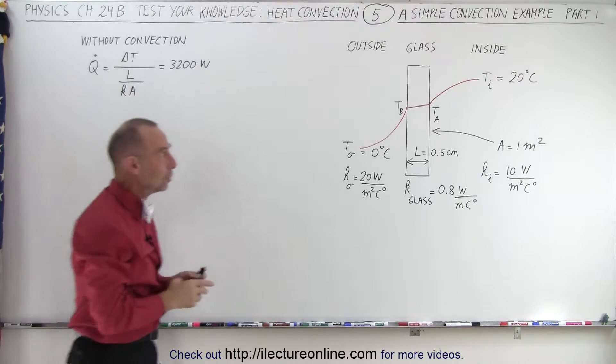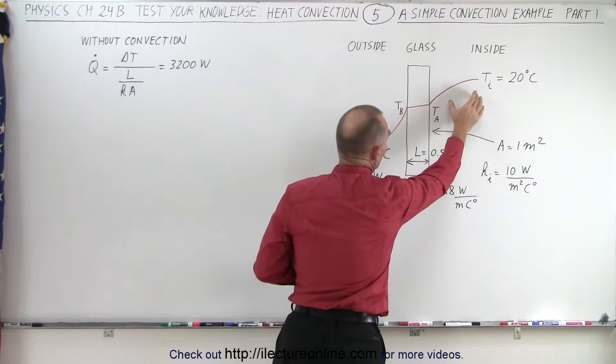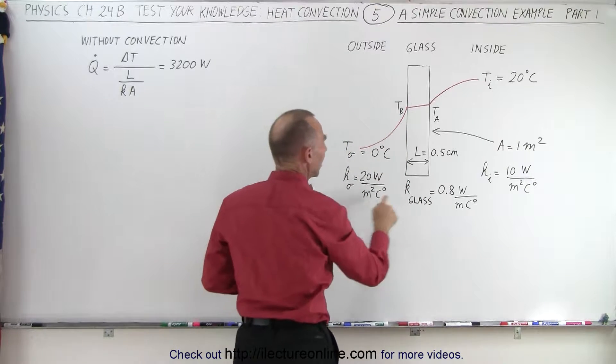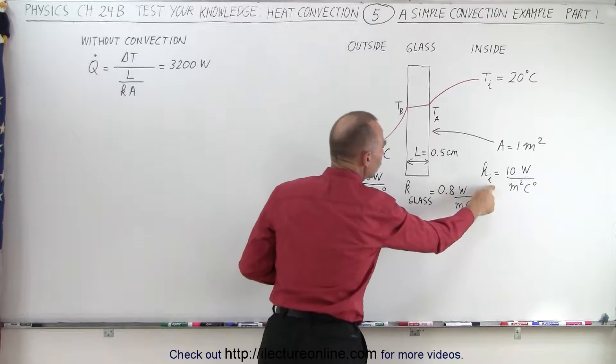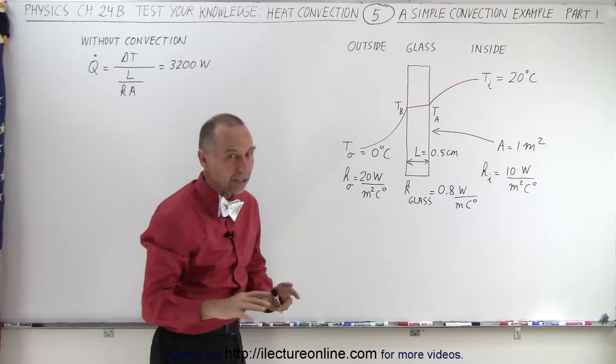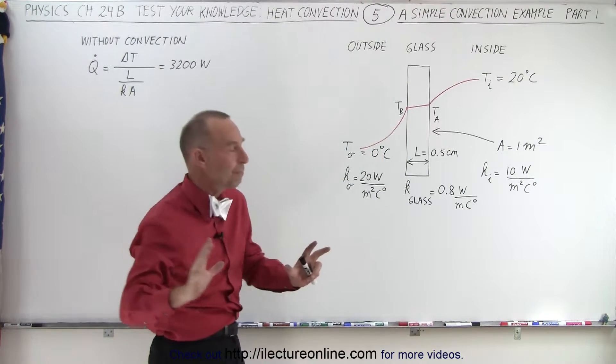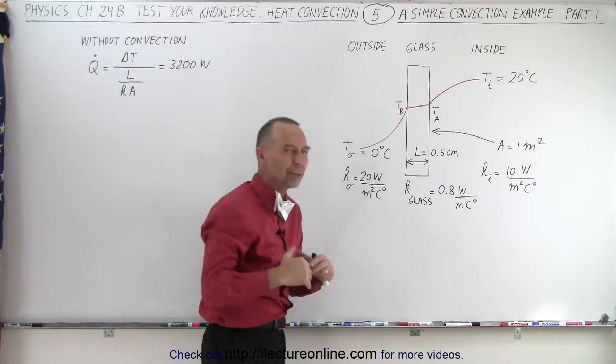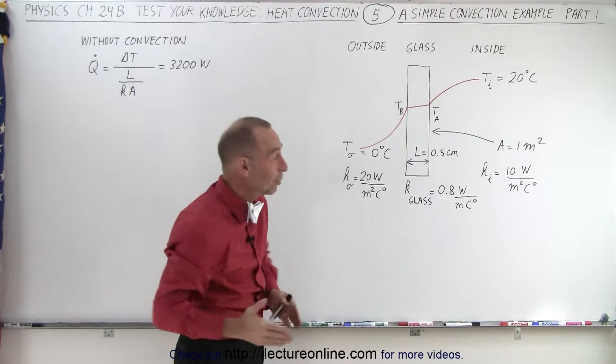But now when we take into account that there's going to be convection on the inside and convection on the outside, let's say that we now include the heat transfer coefficient for the inside and the outside because of convection. These are just randomly picked numbers, though they do fall within the range of acceptable values.